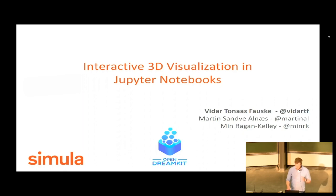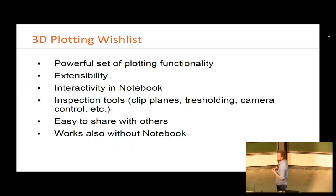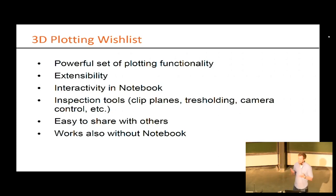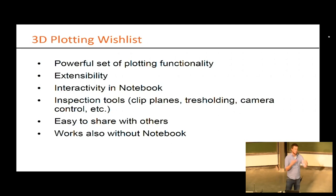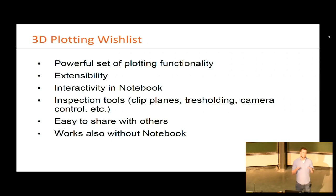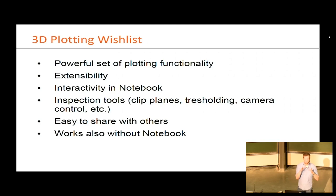If we're going to do 3D visualization in Jupyter notebooks, which is a stated wish, we've made a little bit of a wish list of the features that such a thing would have. Ideally you would want a powerful set of plotting functionality focused on the sciences, you would want the platform to be extensible, and you definitely want interactivity. You want to be able to inspect it more closely, rotate it around — it's not just going to be a static figure — and you want it to be responsive.